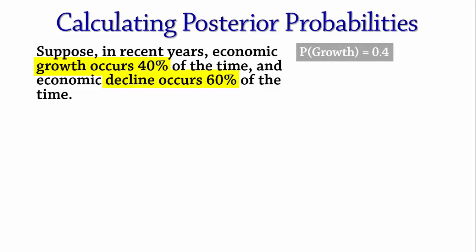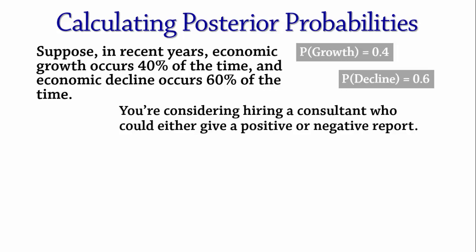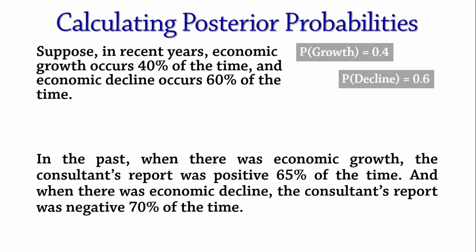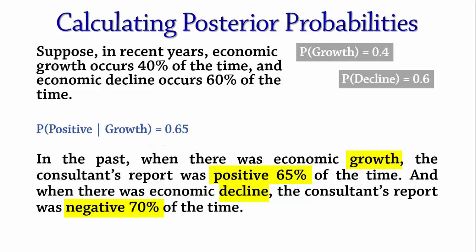You're considering hiring a consultant who could either give a positive or negative report. In the past, when there was economic growth, the consultant's report was positive 65% of the time, and when there was economic decline, the consultant's report was negative 70% of the time. Notice that we can replace the word 'when' with 'given' in this sentence. That is, probability of positive given growth is 0.65, and probability of negative given decline is 0.7.